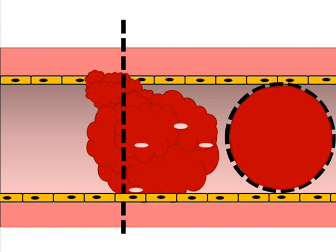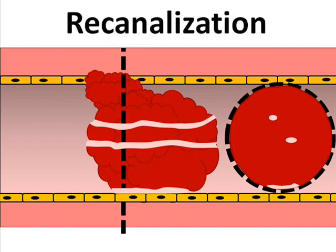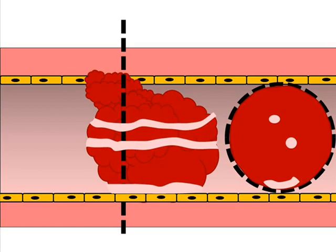These pockets become lined with endothelial cells and are thought to gradually link up such that small channels are created from one end of the thrombus to the other. The formation of these tiny passageways through the clot is called re-canalization. Re-canalization may begin as early as a few days after the occlusion of the vessel, and over time the initially small channels may expand to accommodate more blood flow.